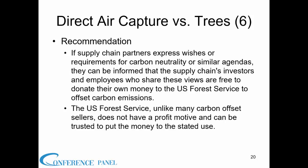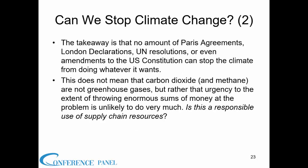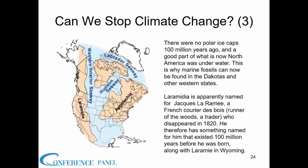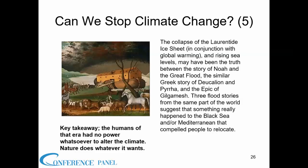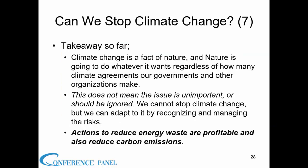No amount of Paris agreements, London declarations, and so on can stop the climate from doing whatever it wants. Looking at the history of the world from about 100 million years ago, the Great Lakes and New York Finger Lakes were once created by glaciers, and obviously primitive humans had no control over these climate events. It had been related to the collapse of the Laurentide Ice Sheet — humans of that era had no power whatsoever to alter the climate. The takeaway: climate change is a fact of nature. However, it doesn't mean we should do nothing. We might not be able to stop climate change, but we can adapt to it by recognizing and managing the risks.